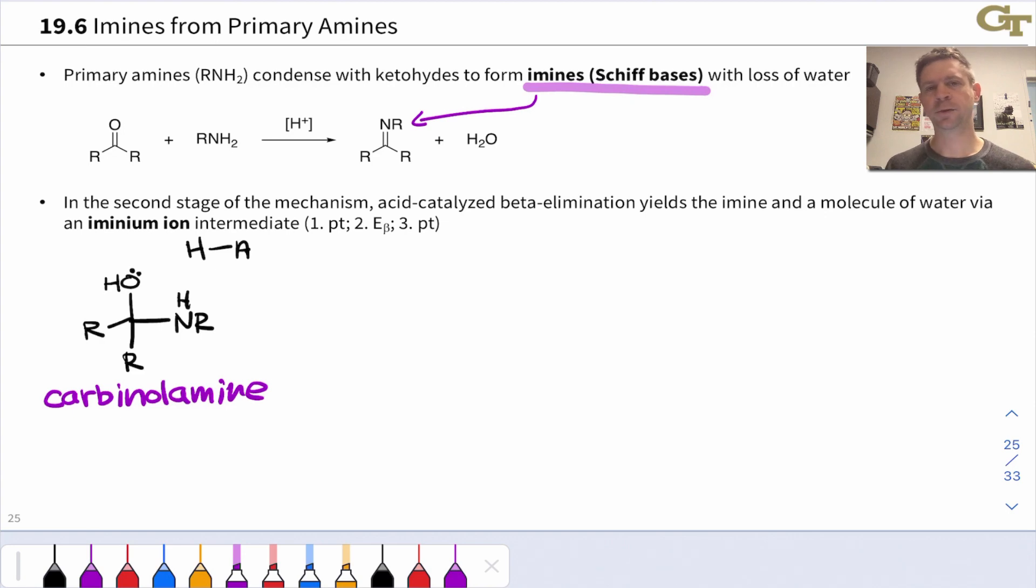In the next step of the mechanism, the carbinolamine is again protonated, but at oxygen rather than nitrogen. Now you may look at this and say the oxygen is clearly not the most basic site, the nitrogen is more basic. That's true, but to a small extent that oxygen will be protonated. Once water gets kicked off and a C=N double bond gets established, the mechanism won't back up.